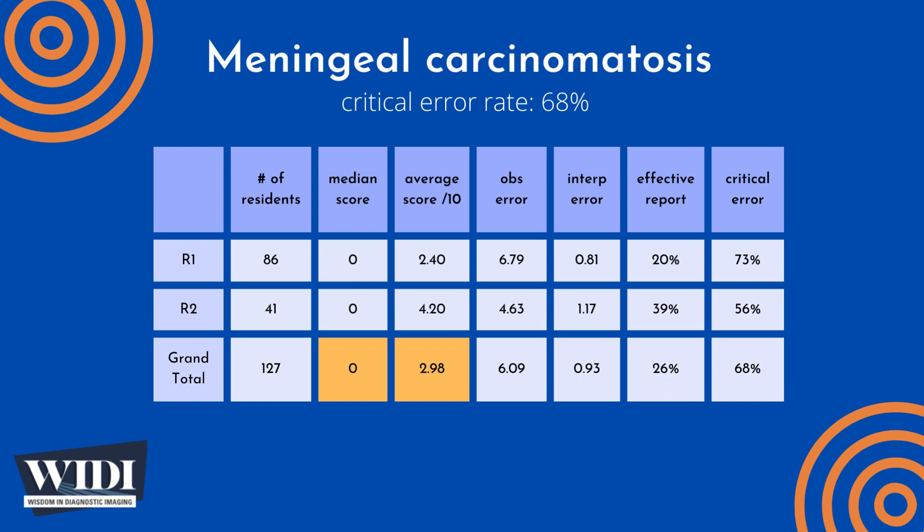Overall, the average number of points lost out of 10 due to observational discipline was 6.09. At the same time, 0.93 points were lost due to interpretive errors on the part of the residents.